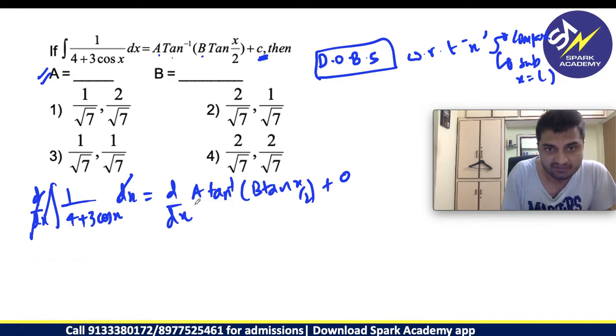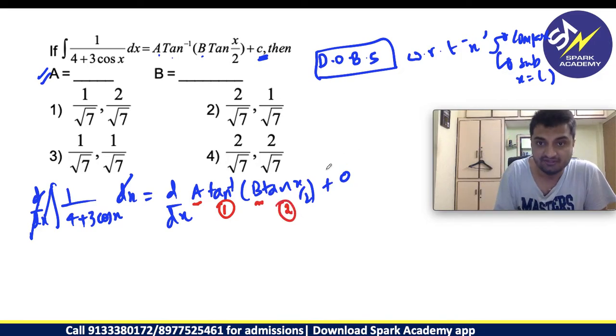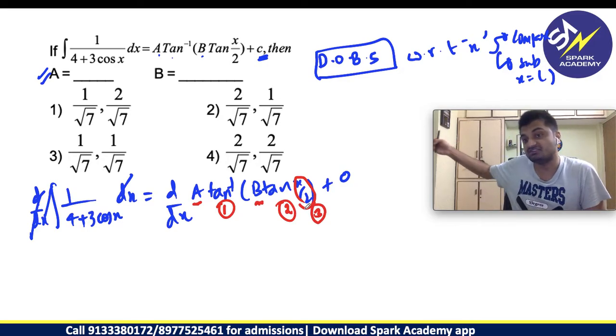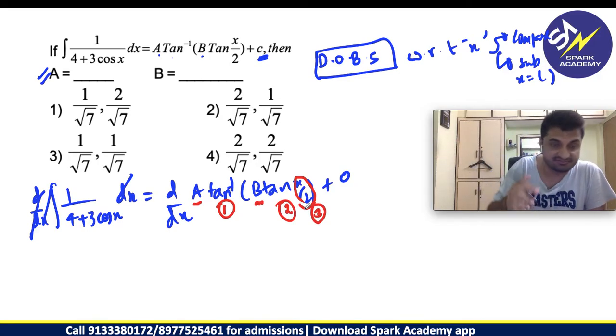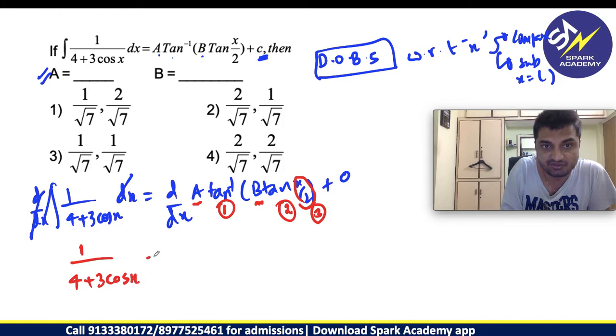Derivative integral will get cancelled. LHS will be the same. What about the RHS? A is a constant. So, tan inverse, first you have to differentiate tan inverse. Then B is a constant. Then you have to differentiate the tan x by 2. Then inside you have x by 2. There are 3 terms inside one another. This is internal differentiation which we are doing.